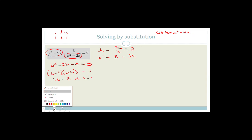Now, this is the part where most students make mistakes - they leave the answer as k equals 3 or k equals 1 and think they're finished. But they didn't ask you to solve for k; they asked you to solve for x. So we need to substitute back. We're going to go: 3 is equal to x squared minus 2x, therefore 0 is equal to x squared minus 2x minus 3. Now we need to factorize this - the factors of x squared are just x and x, and it's going to be a minus and a plus.